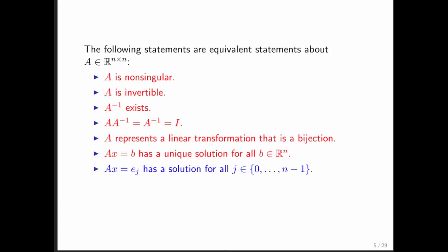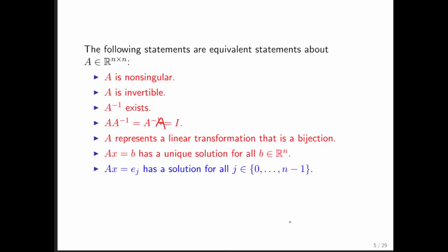But let's first update our list of equivalent statements. I need to correct this right here. That should be A inverse times A. And notice that if A x equals the jth unit basis vector has a solution for all of the unit basis vectors, then you can compute the columns of an inverse matrix, and therefore the inverse matrix must exist.